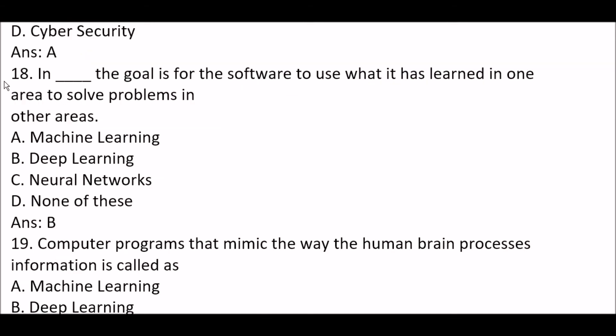Next question: in blank space, the goal is for the software to use what it has learned in one area to solve problems in other areas. Option A: machine learning. The right answer is Option B — deep learning. In deep learning, the goal is for the software to use what it has learned in one area to solve problems in other areas.